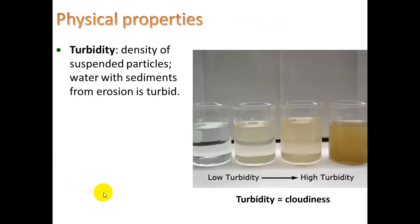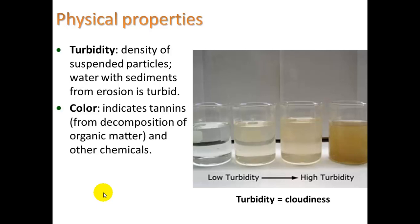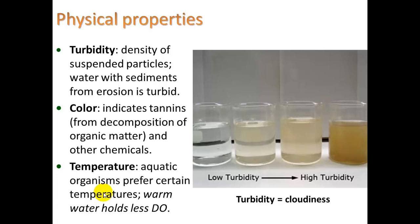As far as physical properties, we look at turbidity — the density of suspended particles. Water with sediments from erosion is turbid. We also look at color, which indicates tannins from the decomposition of organic matter and other chemicals. I remember going swimming in a river in Pensacola, Florida — the river basically looked like tea from the breakdown of leaves, which releases tannins. Temperature is another thing, and aquatic organisms prefer certain temperatures, as we already talked about.